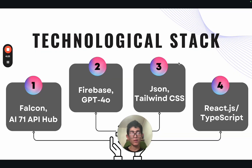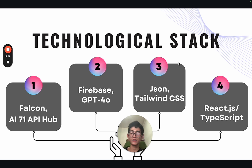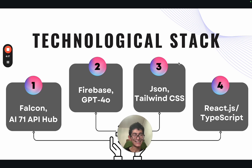About the technological stack: MonkeyType AI is powered by Falcon AI-701, API Hub, Firebase, GPT-4O, JSON, Tailwind CSS, and ReactJS with TypeScript.